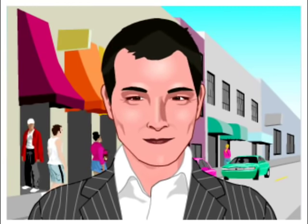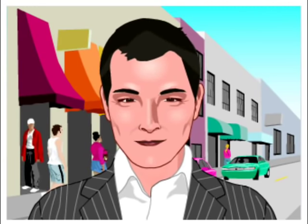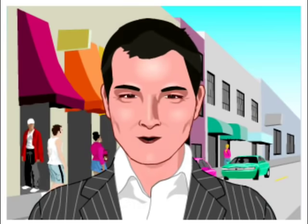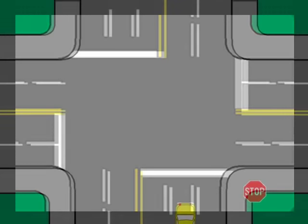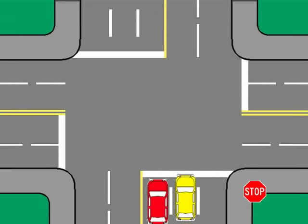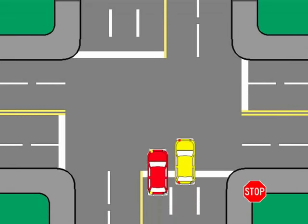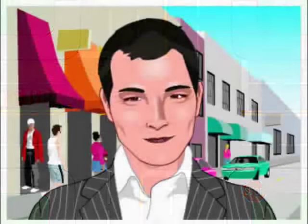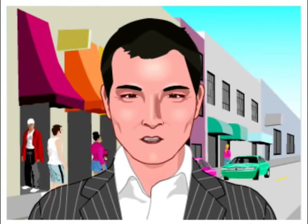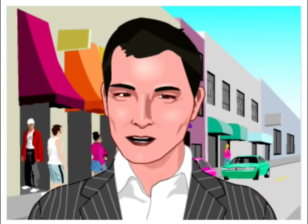Six of nine — left turns from a two-way street to another two-way street: double left turns. Where signs or lights indicate that two lanes of traffic may turn left, you must move into one of the lanes. Proceed through the intersection and complete the turn in the same lane.